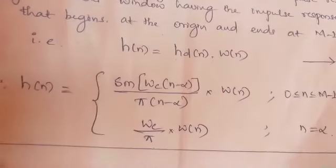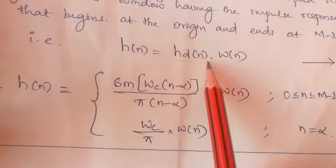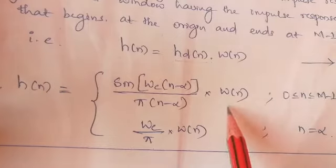w(n) indicates window function. So hence, same thing. Already we calculated hd(n), for that multiply w(n). That's it.